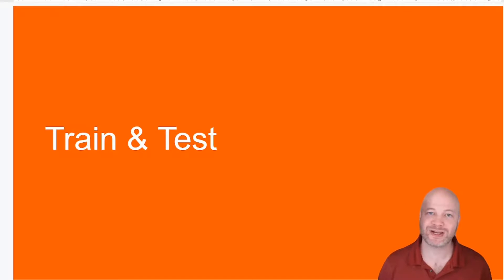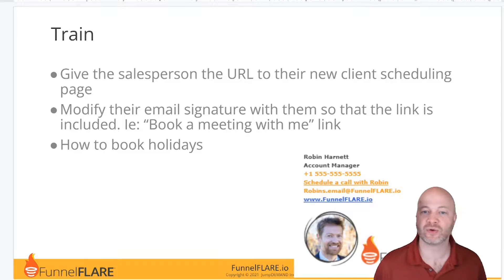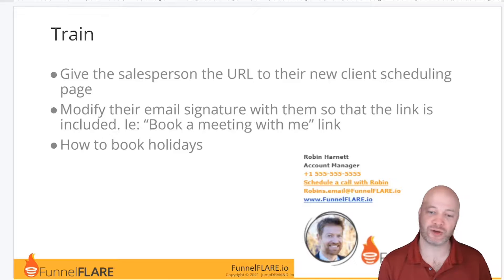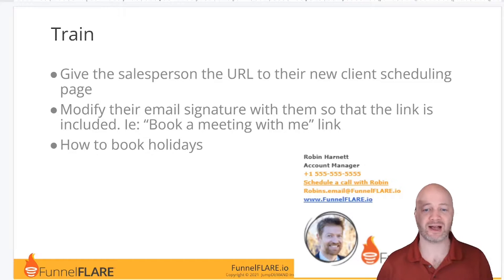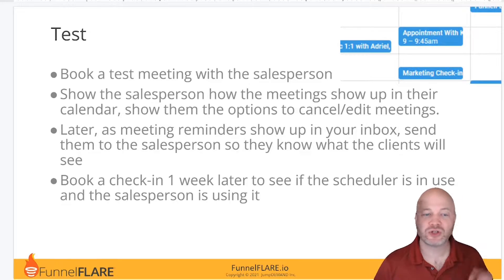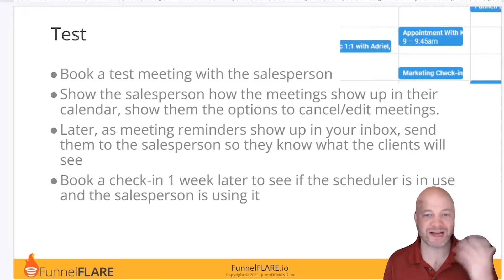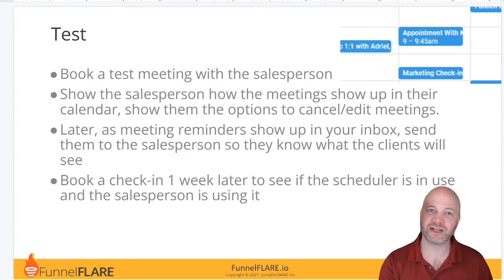While you're still in this meeting, you may want to get into some training and testing as well. Give the salesperson the URL to their new client scheduling page. Get them to modify their email signature so the link is included with a 'book a meeting with me' or 'schedule a call' link using that URL. Also show them how to book holidays or block time when they don't want people booking into their calendar — if they add a busy block in their calendar, clients can't book into that time. Then actually test it: book a test meeting with the salesperson, show them the whole process on your phone, go to their URL, book it, show them how it appears in their calendar, and show them the options for canceling or editing. Later, as the meeting reminders show up in your inbox, forward them to the salesperson so they know what their clients are going to receive.